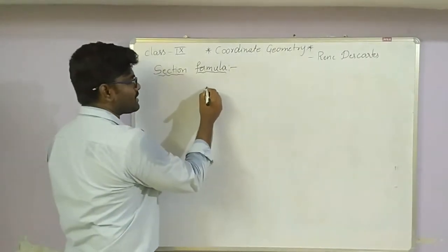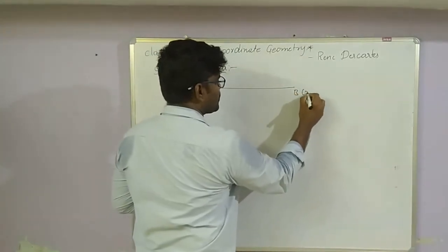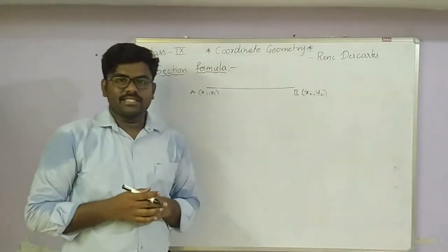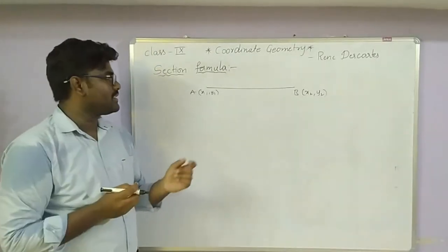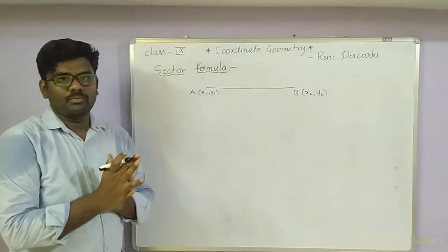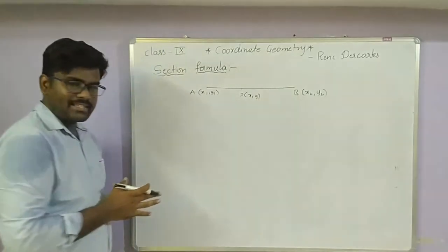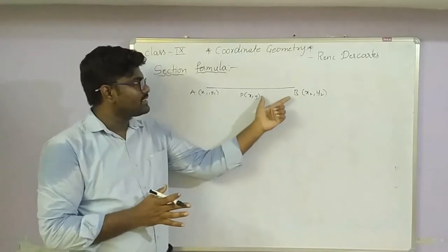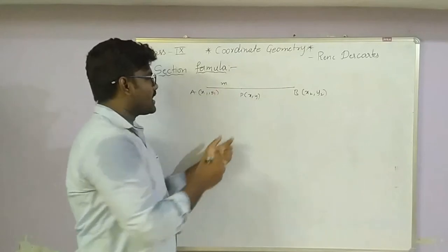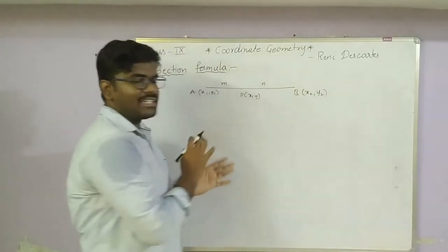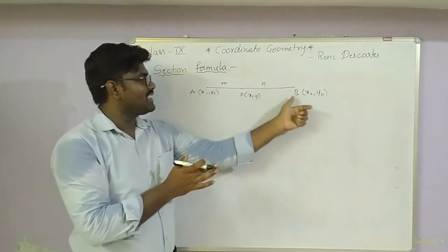We are given a line segment joining the points A (x1, y1) and B (x2, y2). Section means we take another point which divides the line segment into two parts. For example, point P (x, y) divides the line segment into two parts — from A to P is m units, and from P to B is n units — so P divides AB in the ratio m:n.